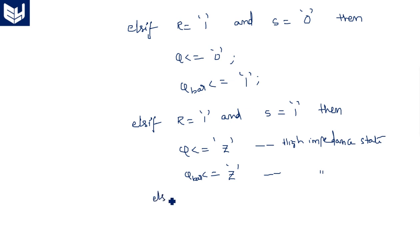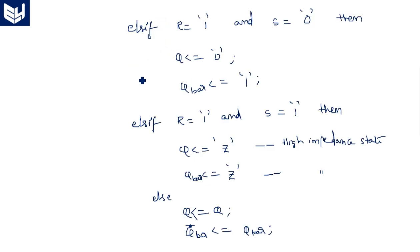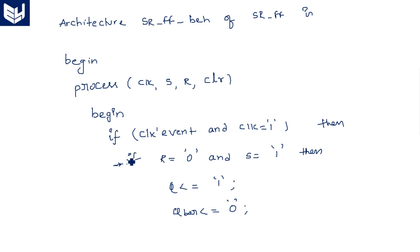Else — if any of the above conditions are not met — then Q is equal to Q and Q_bar is equal to Q_bar, meaning whatever previous states we had, those same values will be retained. This handles the no-change condition.